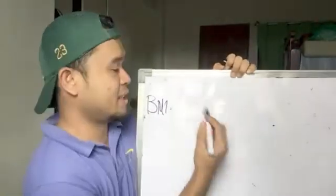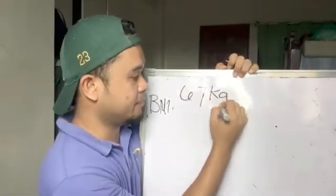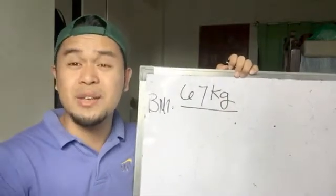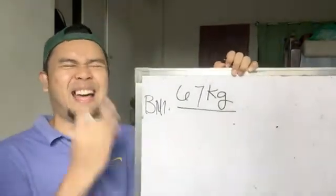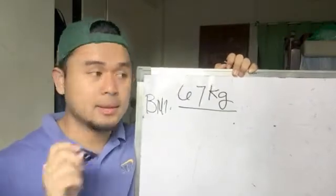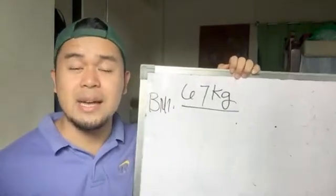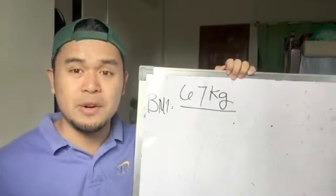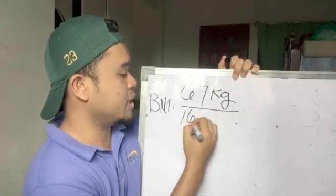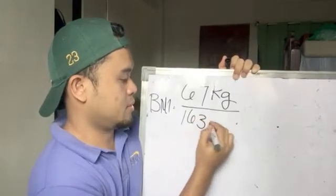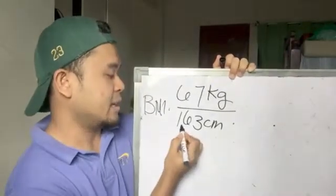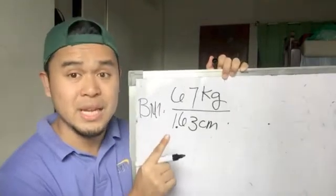My weight is 67 kilograms, and my height is 163 centimeters — that's 5 feet and 4 inches. So in meters, 163 centimeters becomes 1.63 meters.